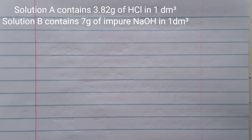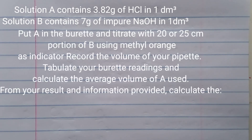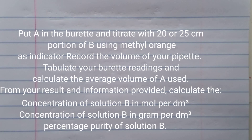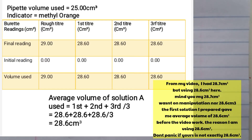Question three: Solution A contains 3.82 grams of hydrochloric acid per 1 dm³. Solution B contains 7 grams of impure sodium hydroxide. Put A in the burette and titrate with 25 cm³ portions using methyl orange as indicator. From your results, calculate: A — concentration of solution B in mole per dm³; B — concentration of solution B in grams per dm³; C — percentage purity of solution B. This question is about percentage purity, unlike question one which was a direct titration, and question two which involved finding a missing molar mass.